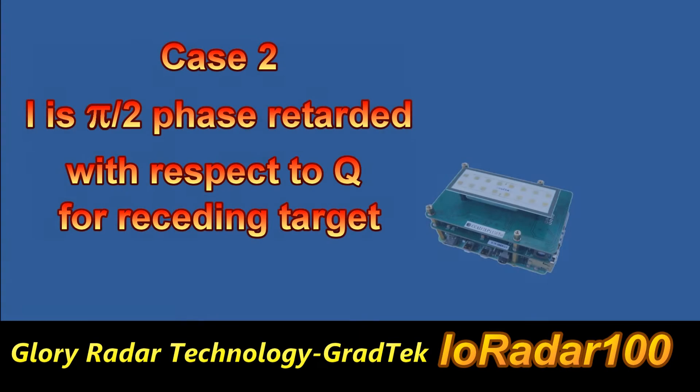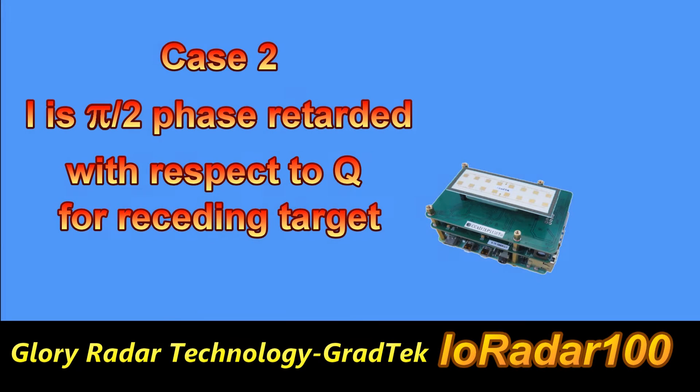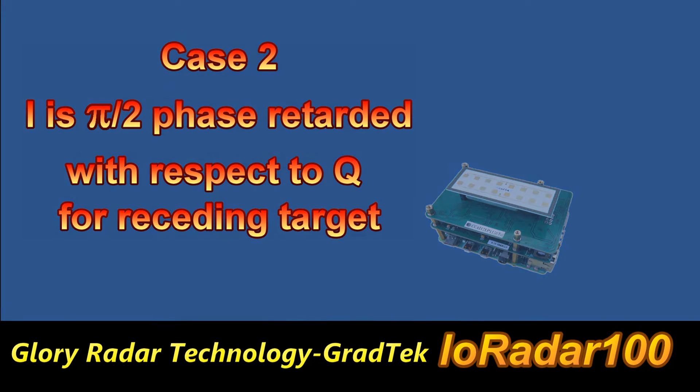Case 2: I is Pi over 2 phase retarded with respect to Q for a receding target.